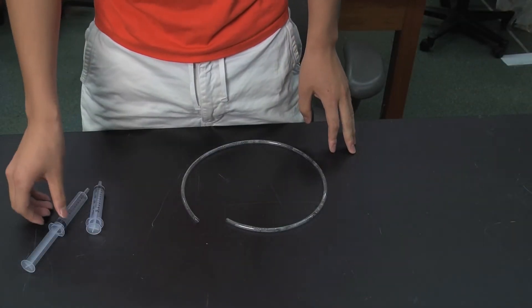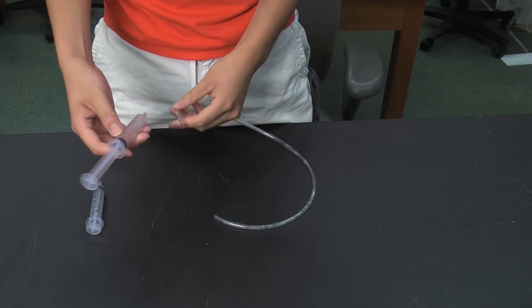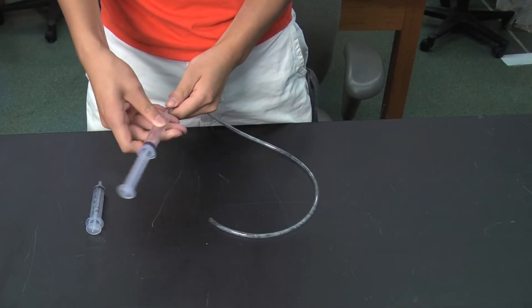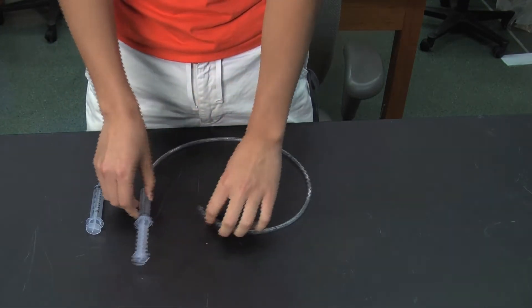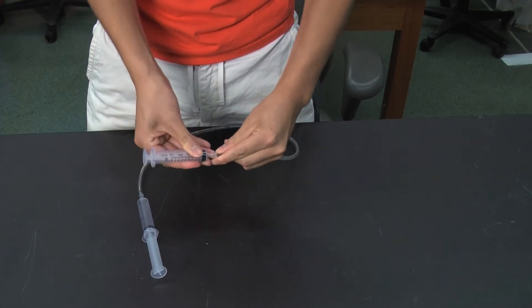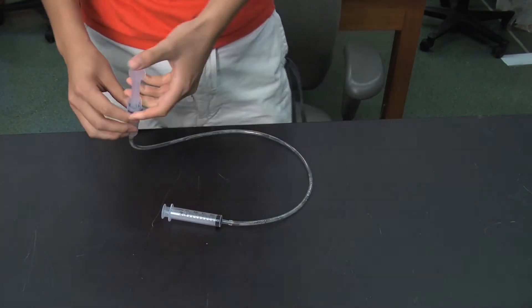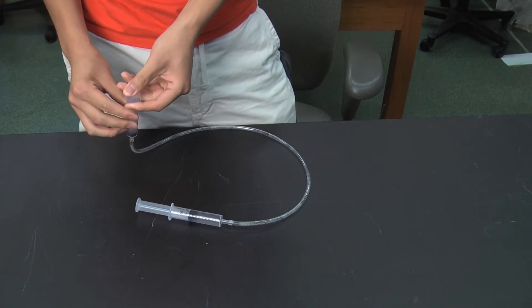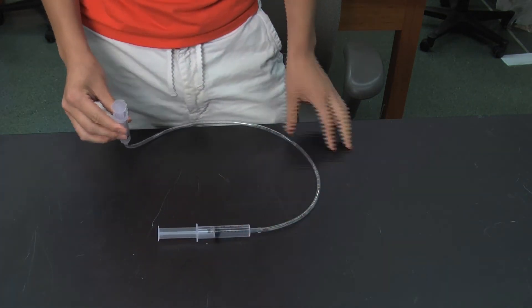Show the students how to put the syringes together like this: have one syringe with the plunger out and put in one end of the tubing, and have the other syringe with the plunger in at the other end. When you press one end of the syringe, the other syringe's plunger pops out.